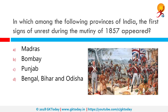In which among the following provinces of India did the first signs of unrest during the mutiny of 1857 appear? Several months of increasing tensions coupled with various incidents preceded the actual rebellion. On 26 February 1857, the 19th Bengal Native Infantry Regiment became concerned that new cartridges they had been issued were wrapped in paper greased with cow and pig fat, which had to be opened by mouth, thus affecting their religious sensibilities. The mutiny first started in Bengal, Bihar and Orissa.